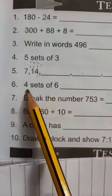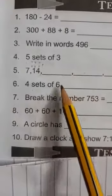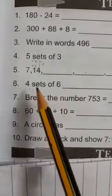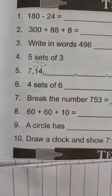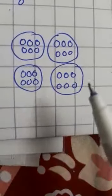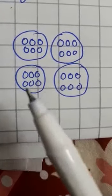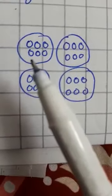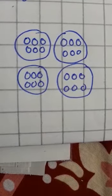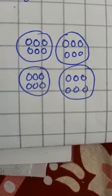Now number six: four sets of six. You have to make four sets and in every set you have six balls or six things. Like this you have to draw four sets of six — there are four sets and in every set we have six balls.